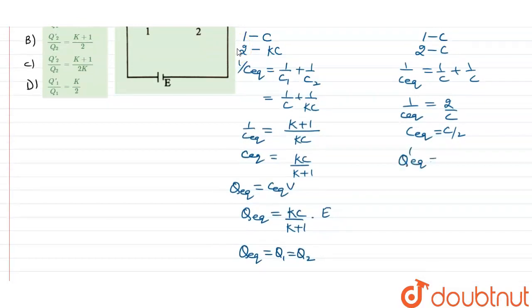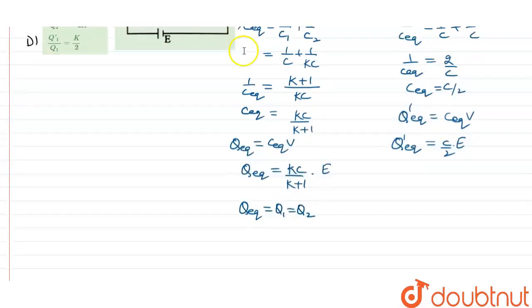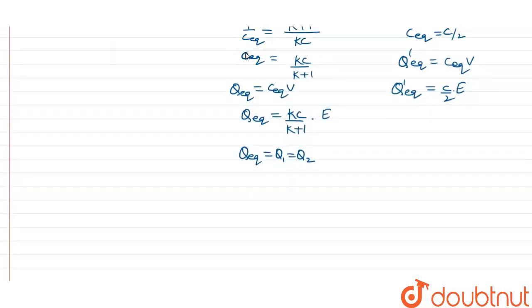Q dash equivalent equals C equivalent times V, and that is Q dash equivalent equals C/2 times E. As these are also in series, Q dash equivalent equals Q dash 1, and that is equal to Q dash 2.